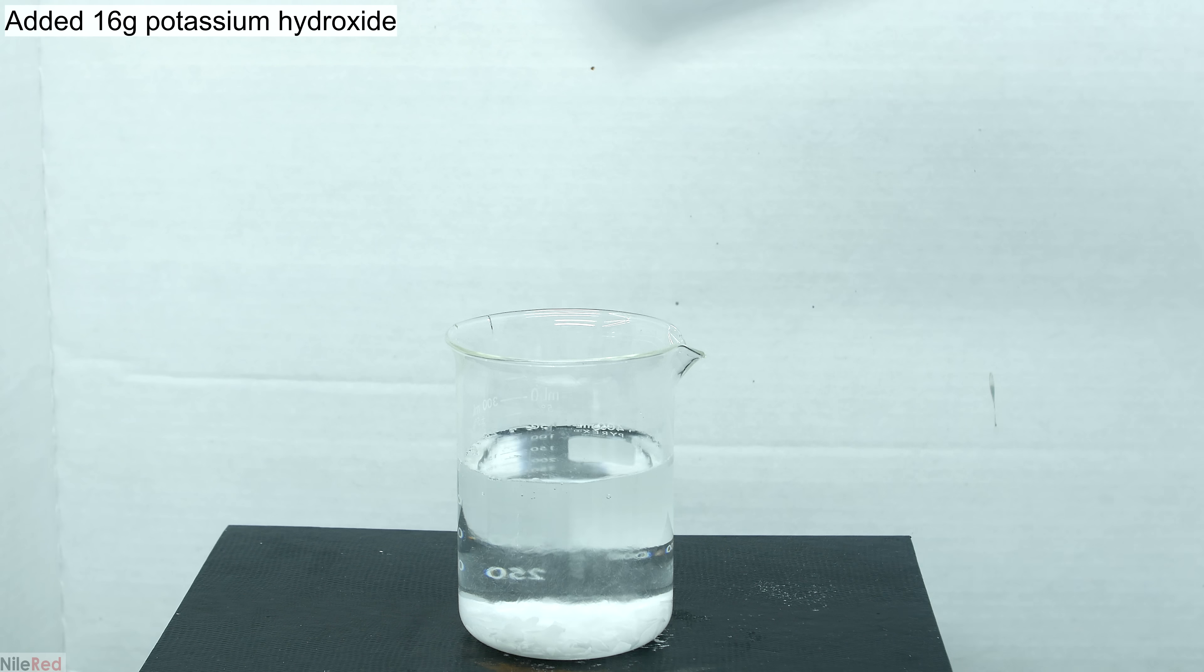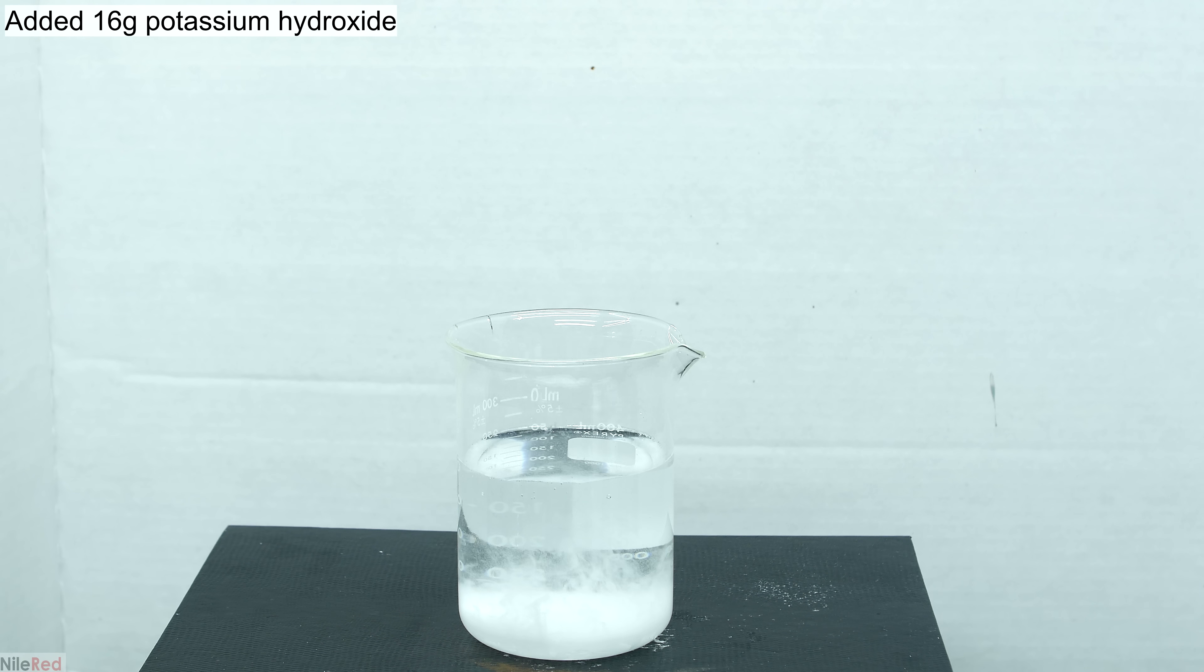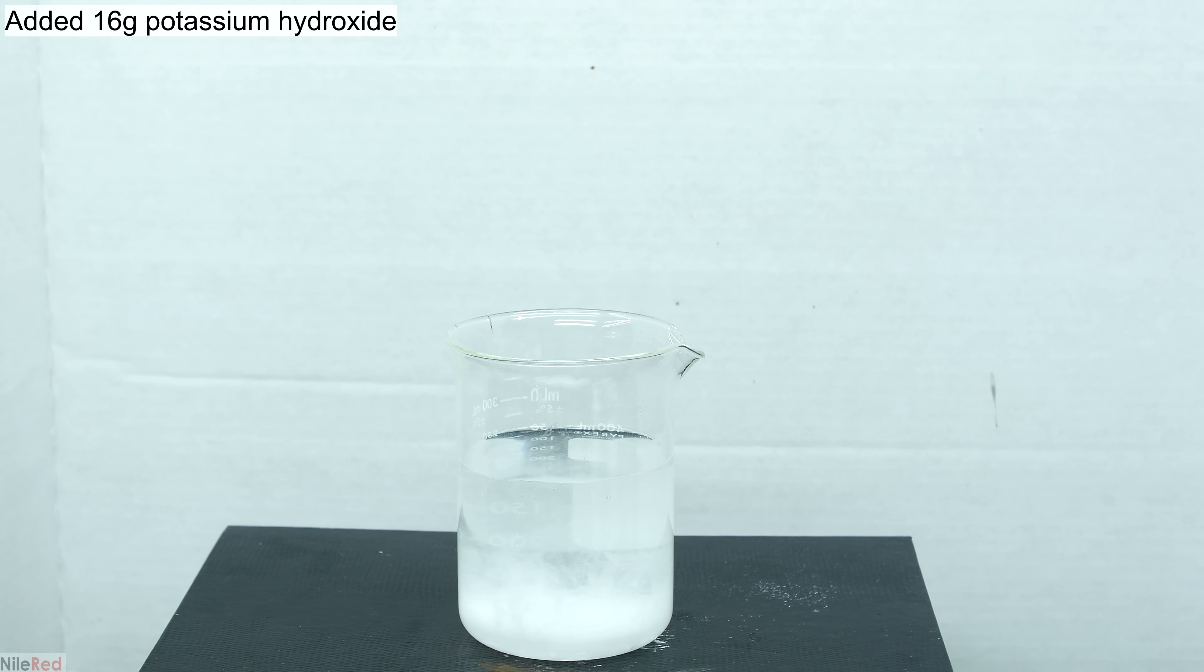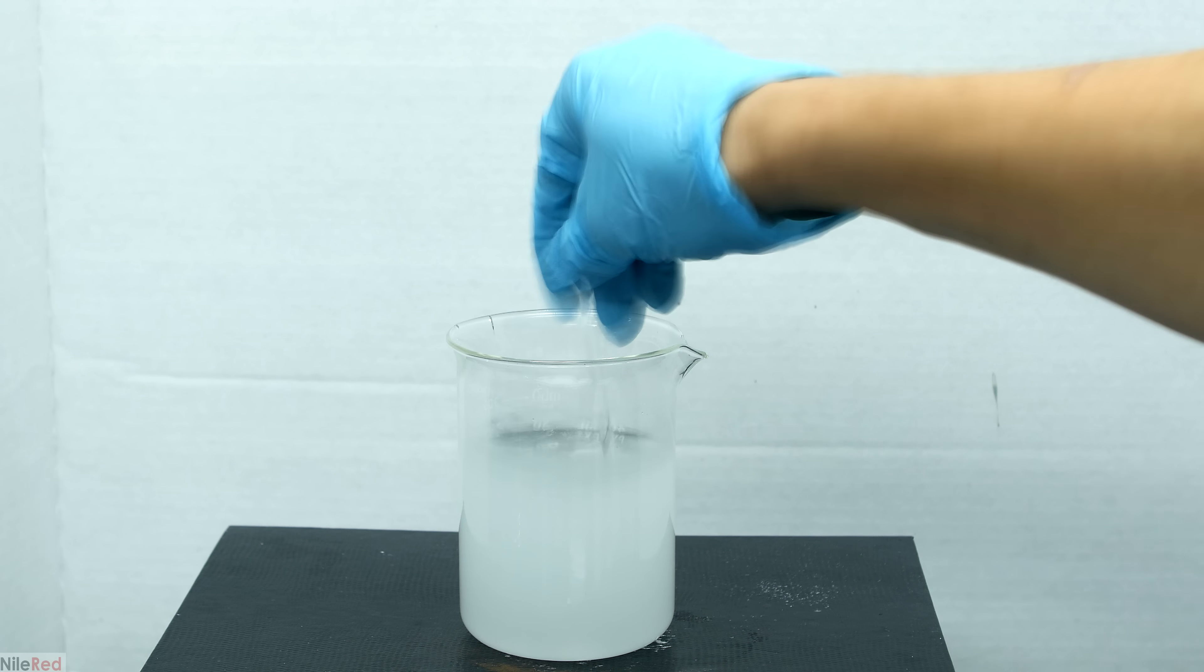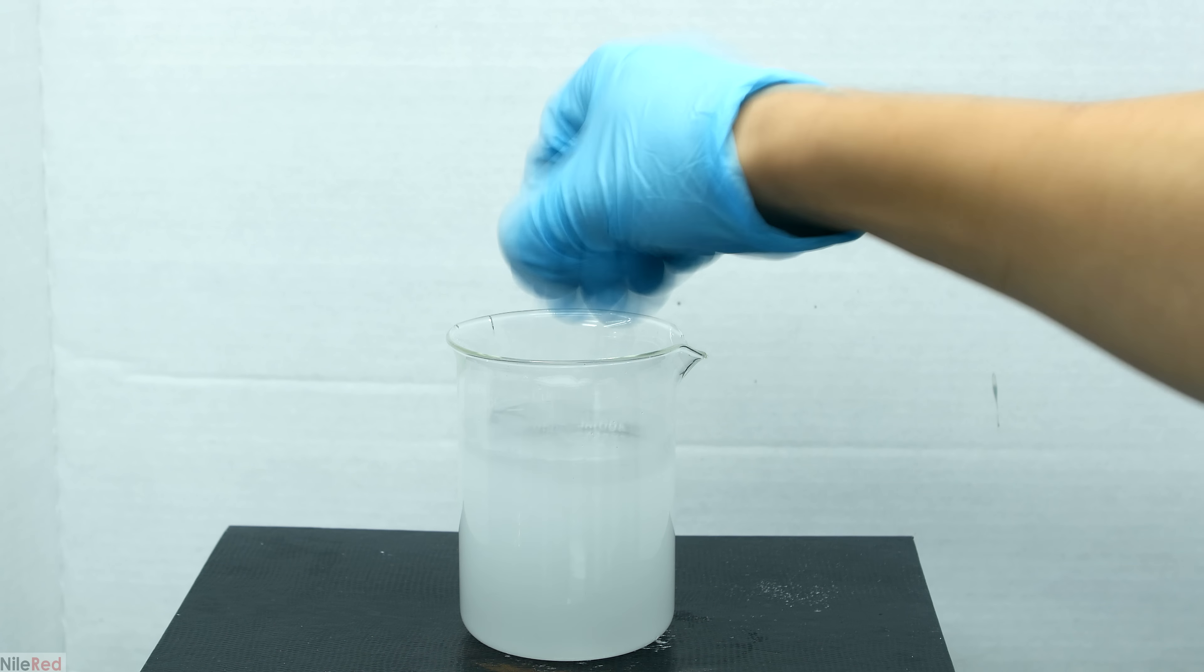We start off by dissolving the 16 grams of potassium hydroxide in about 250 milliliters of distilled water. Using a glass stir rod I mix things around until all of the potassium hydroxide has dissolved.